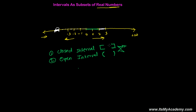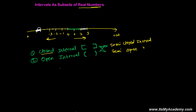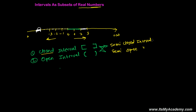By mixing closed interval and open interval we can make two other things: first, half closed and half open — we call that a semi-closed interval, and similarly a semi-open interval. In a semi-closed interval, from one side it is closed but from another side it is open. In a semi-open interval, from one side it is open and from another side it is closed. Let's go through each one with examples.